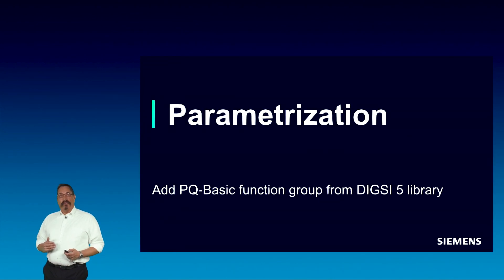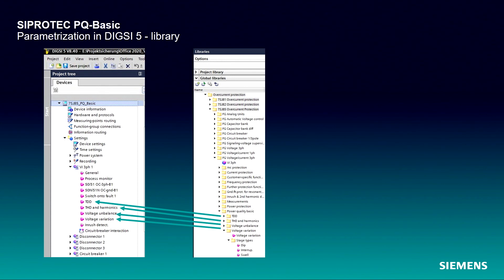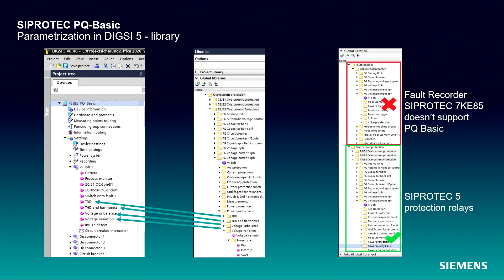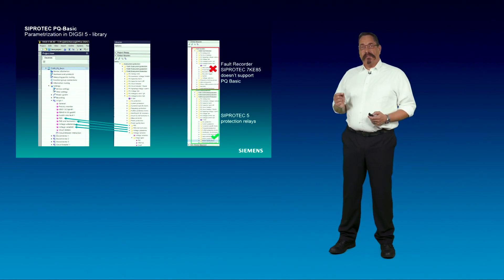Select PQBASIC function groups from the Dixi5 library. The Dixi5 library provides, inside the measurement function group, all functions related to PQBASIC. You have to drag and drop the functions into your device. PQBASIC is available for all SIPROTEC 5 protection relays with firmware 8.40 onwards. The new SIPROTEC 5 compact device can be equipped with PQBASIC as well. In the Fault Recorder 7KE85, PQBASIC is not implemented because this device already covers several measurement functionalities.